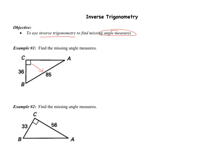So across from C is going to be the hypotenuse, so I have the hypotenuse. And then I have the side across from A, which is going to be the opposite side. Now we should know that O and H go with sine. If you don't remember that, put it at the top of your page — SOH-CAH-TOA. So O and H is going to go with sine, so I have sine of angle A equals 36 over 85.